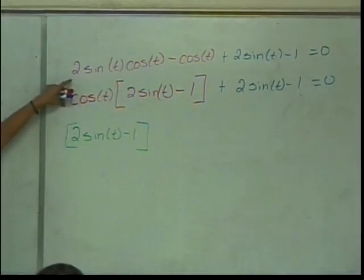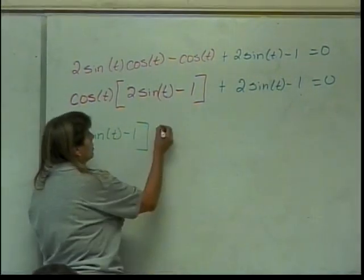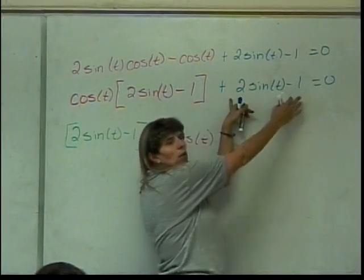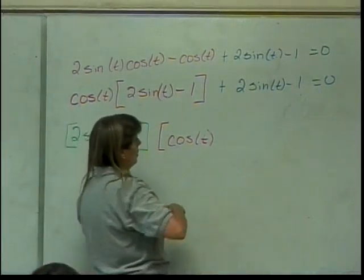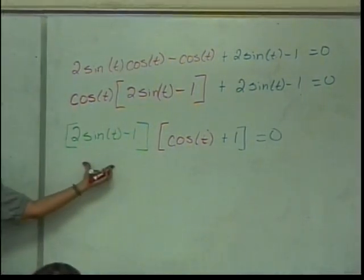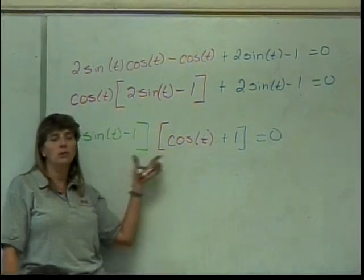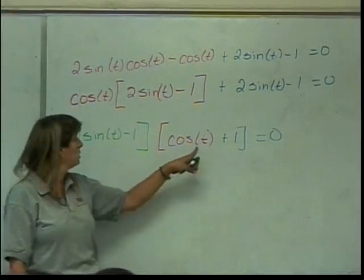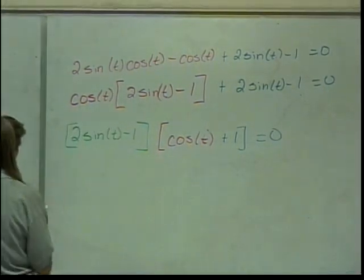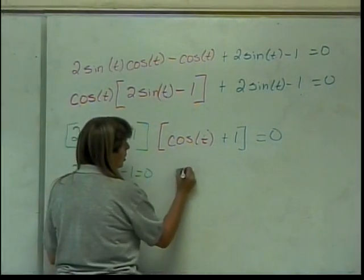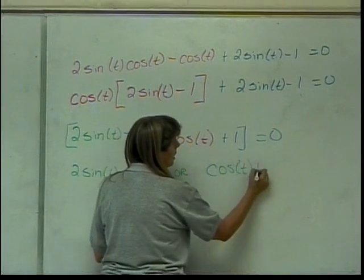When I factor that out of the cosine of t times (2 sine of t minus 1), what am I left with? A cosine — cosine of t. When I factor it out of the other part, I'm left with 1. So then I have cosine plus 1 equals 0. I have the green part multiplied by the multicolored part equal to 0. The zero product principle says one of them must be 0, so I can set each piece equal to 0.